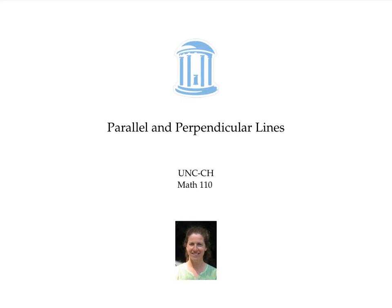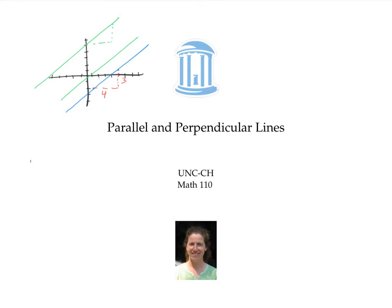This video is about finding parallel and perpendicular lines. Suppose we have a line of slope three fourths — in other words, the rise over the run is three over four. Any other line that's parallel to this line will have the same slope, the same rise over run. So our first fact to keep in mind: parallel lines have the same slopes.